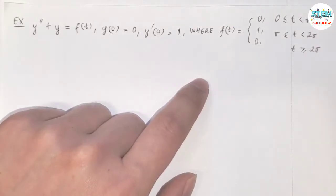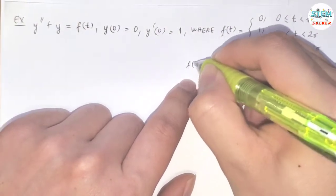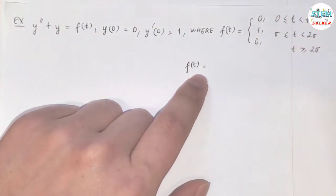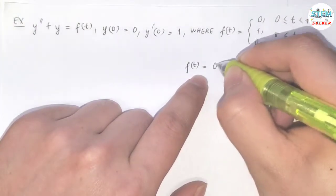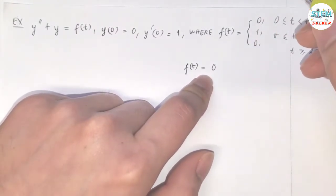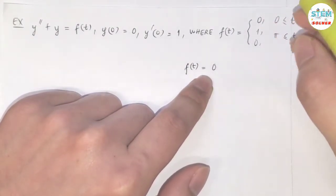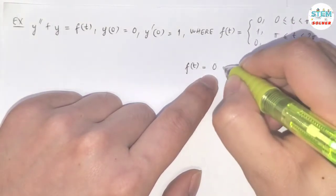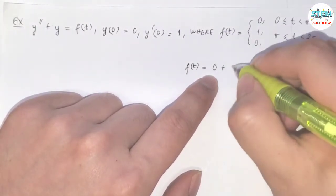So it turns out, when I start with 0, normally I wouldn't write 0, but for the purpose of clarification I will write it out for you. And then the next function is 1, so we need to have 1·u(t - π).